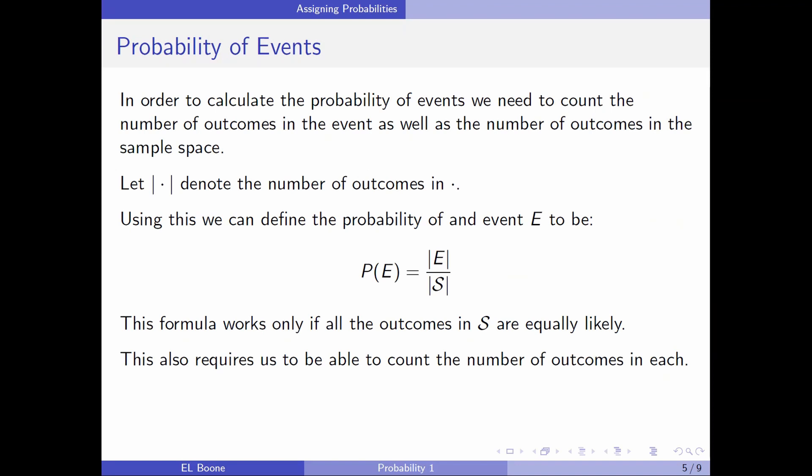If we're interested in the probability of an event, we need to count the number of outcomes in the event, as well as the number of outcomes in the sample space. We're going to let this double bar denote the number of outcomes in some event or set. And I called it dot. So we can define the probability of an event E to be the probability of E is the number of events or outcomes inside event E over all the possible outcomes of my experiment. Now, this formula only works if all the outcomes in S are equally likely. If they're not, then you have to work around it. It also needs us to count these, right? It counts the number of outcomes in any event and the number of outcomes in S.